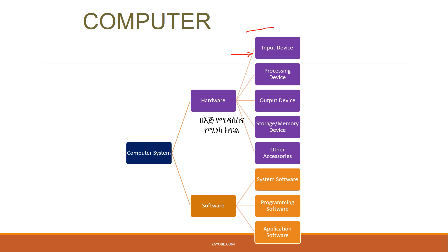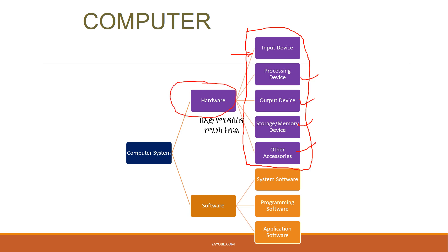The computer is used with output via the device. It involves a process, processing device, storage device, and accessories. There may be a problem with the hardware.